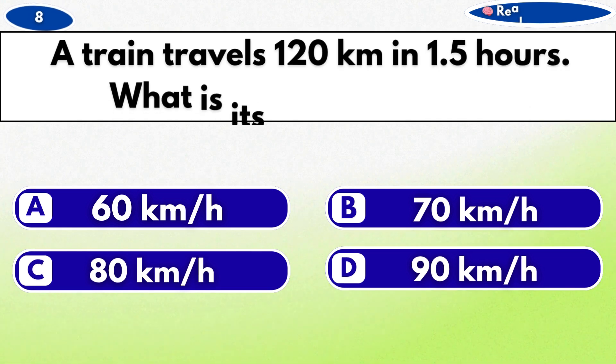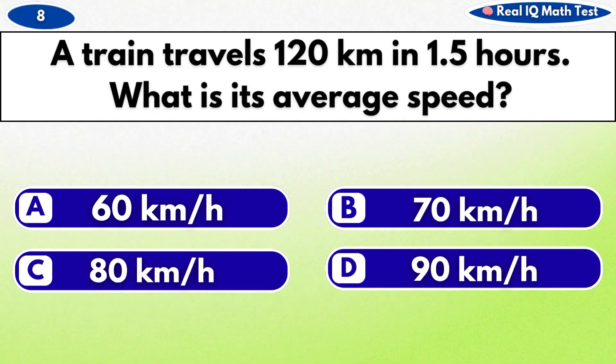A train travels 120 kilometers in 1.5 hours. What is its average speed?